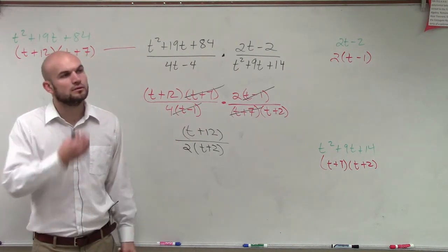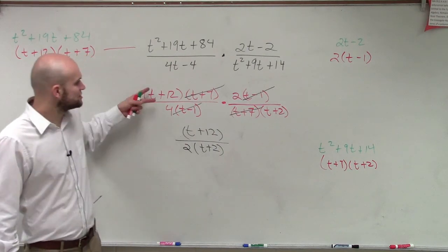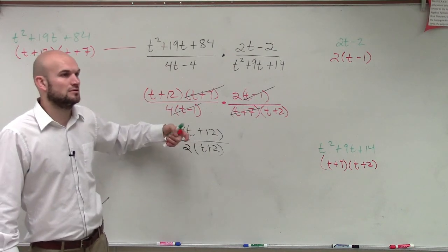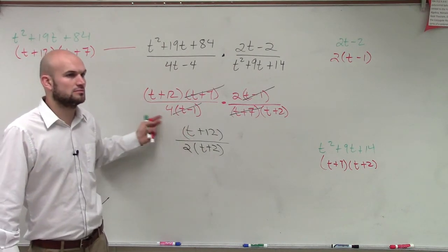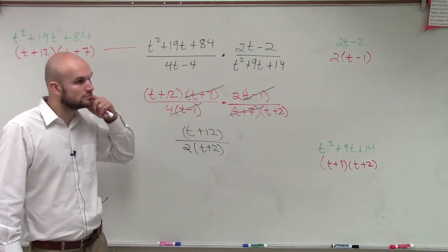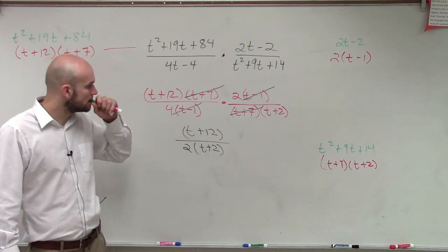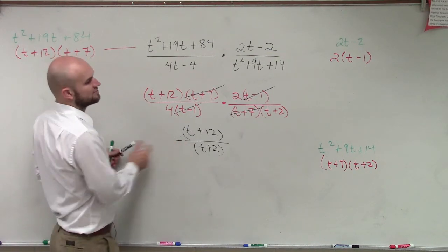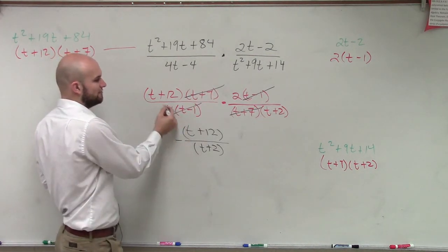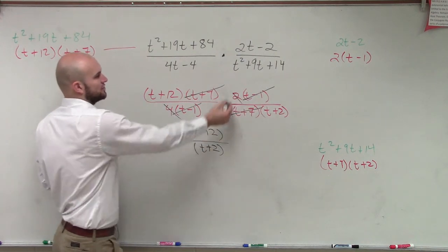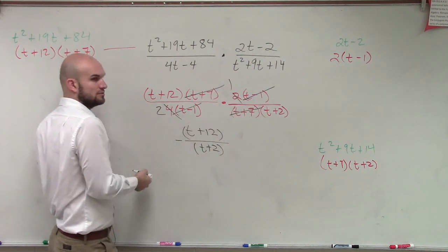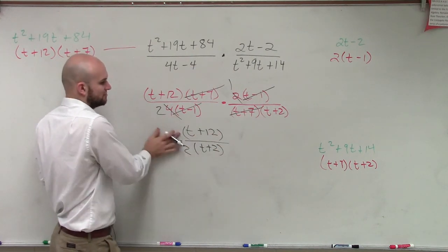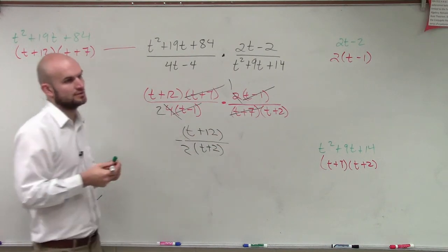It's 2 fourths. 2 fourths is the same thing as 1 half, right? So, but I don't need to write the 1. Okay, watch. Let's write this in. 2 and 4. 2 divided by 4 cancels to 1 divided by 2. So therefore, it's 1 over 2. But 1 times t plus 12 is just the same, so we don't need to write the 1.